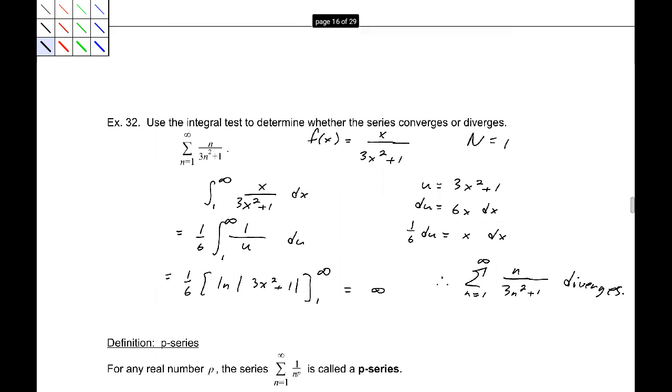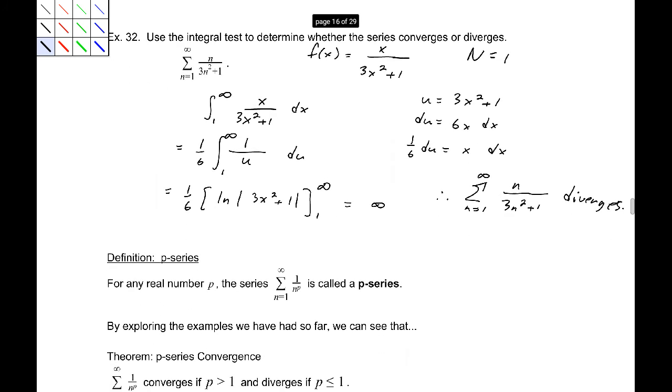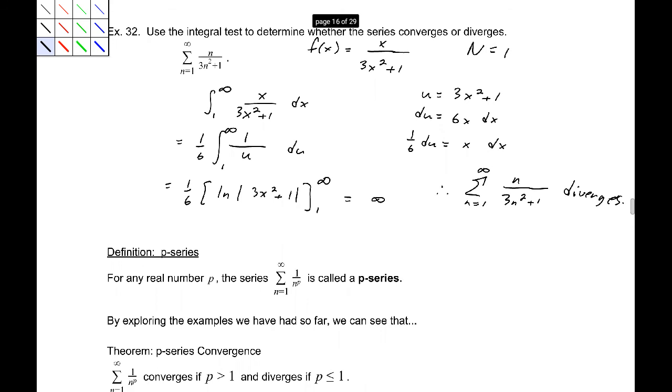The last topic we have in this section is a p-series. So for any number p, the series 1 over n to the p from 1 to infinity is called a p-series. Now, we've seen a couple of examples. If p equals 1, then that is the sum of 1 over n which diverged. That is the harmonic series.